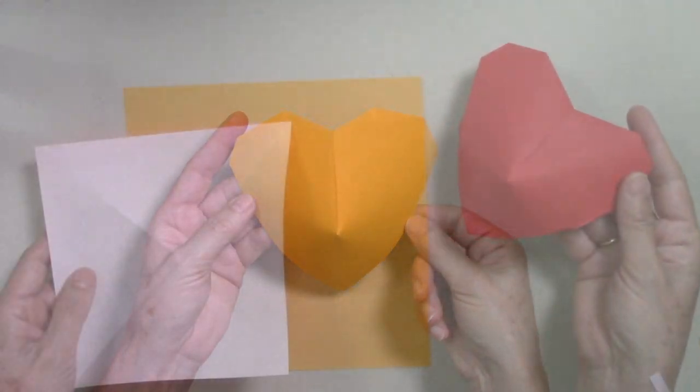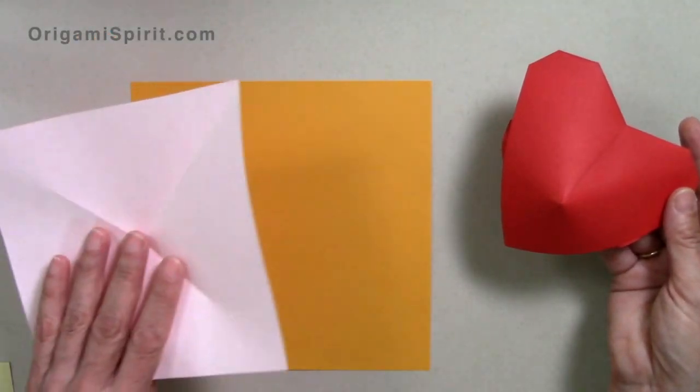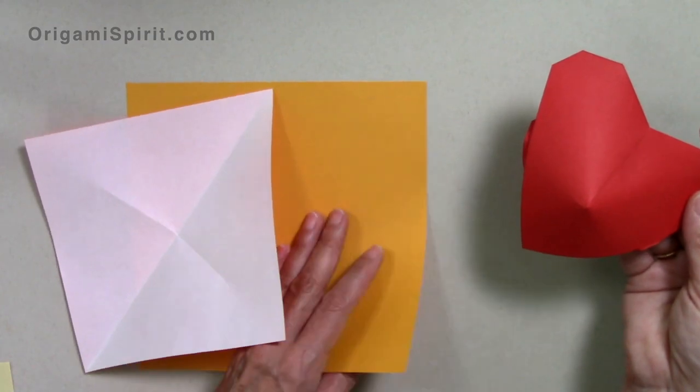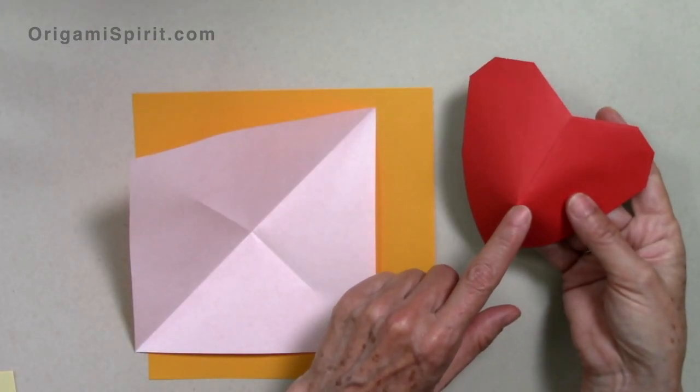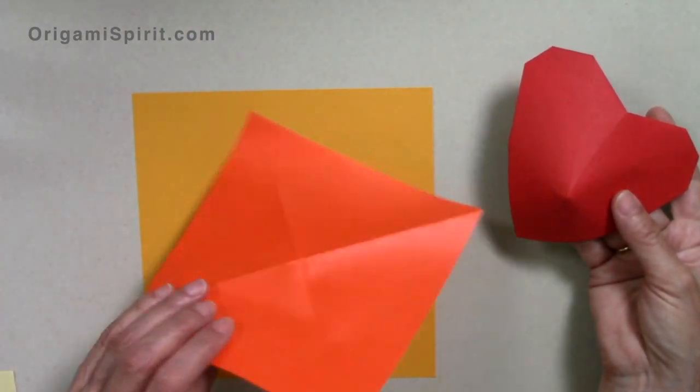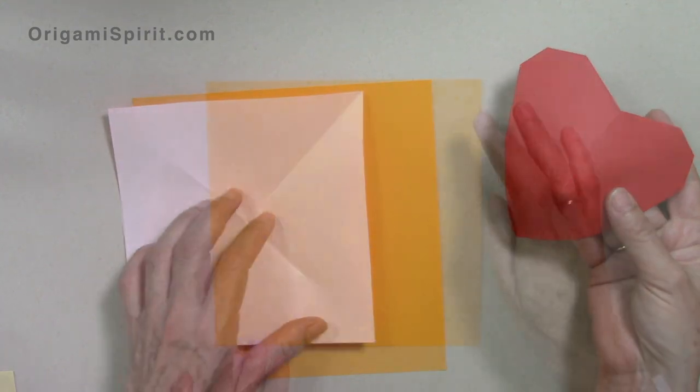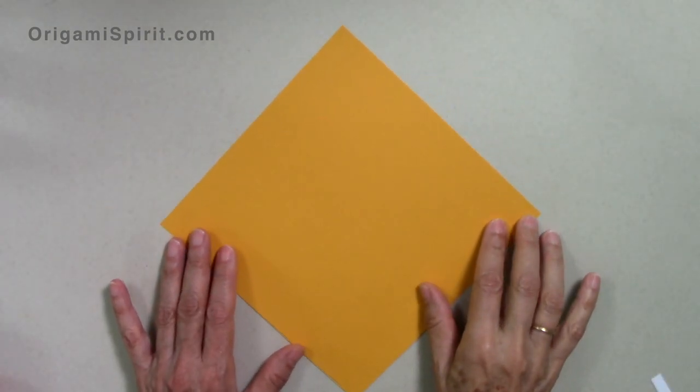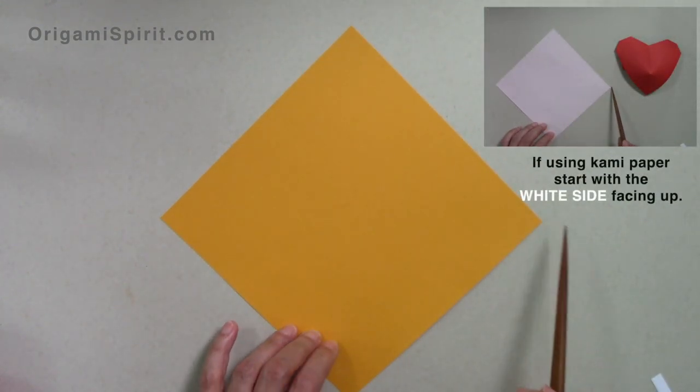This heart can be made with thinner paper, such as kami paper, or with printer paper like this one. If you want to make it with kami paper for a colored heart, start with the white side facing up. Rotate the paper so that it looks like a diamond, and we are going to fold in half, corner to corner.